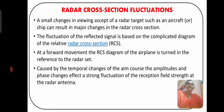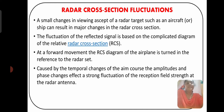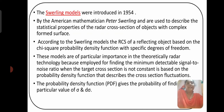A small change in the viewing aspect angle of the radar target, such as an aircraft or ship, can result in major changes in the radar cross-section. The fluctuation of the reflected signal is based on the complicated diagram of the related radar cross-section. At a given moment, the RCS diagram of the airplane is oriented relative to the radar set, and caused by the temporal change of the aimed course, the amplitudes and phases change, effectively producing strong fluctuations of the reception field strength at the radar antenna.